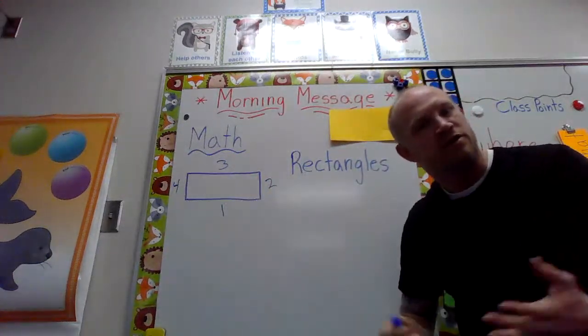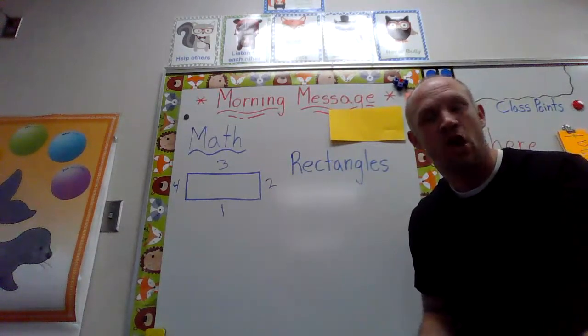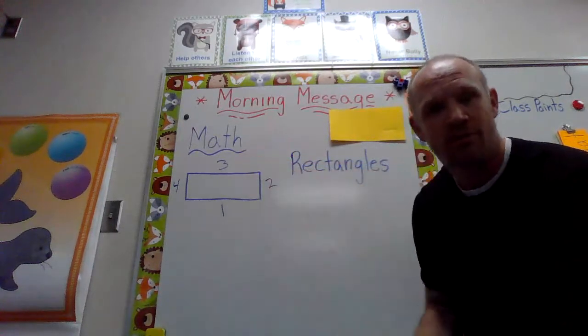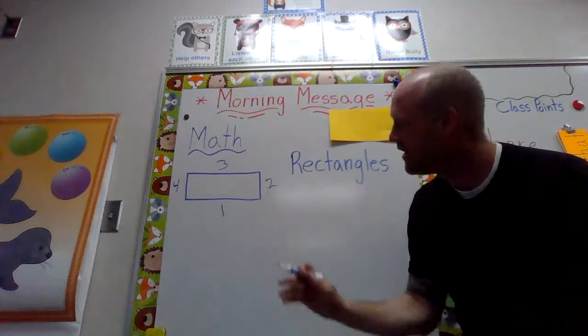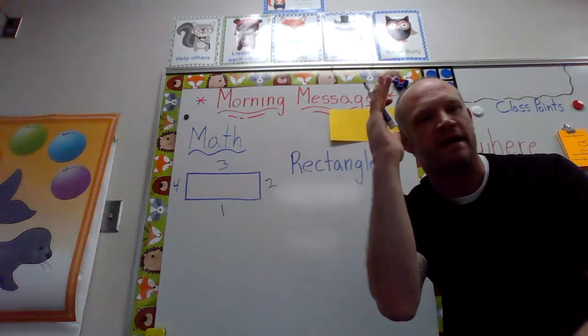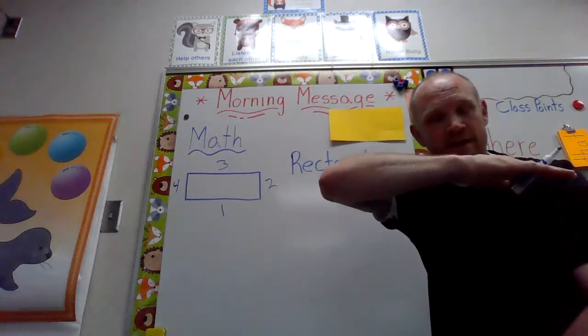So does a square, but what's different about these sides? Oh, look at the sides across from each other. They're the same, but they're different than the vertical sides of the shape. So your horizontal sides are the same and your vertical sides are the same.